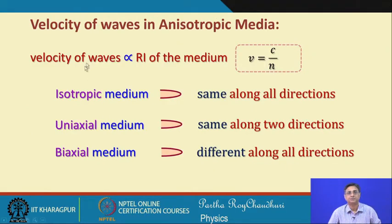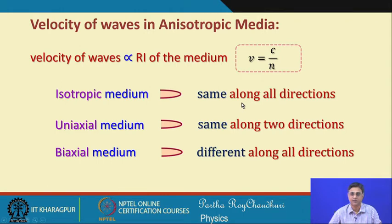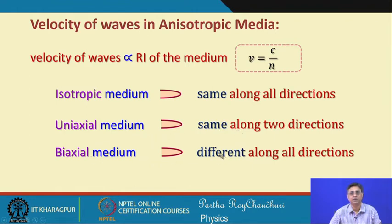To summarize: wave velocity is proportional to refractive index. For an isotropic medium, electromagnetic wave velocities are the same in all directions. For a uniaxial medium, velocities differ along two directions, and for a biaxial medium, velocities are different along all three directions.